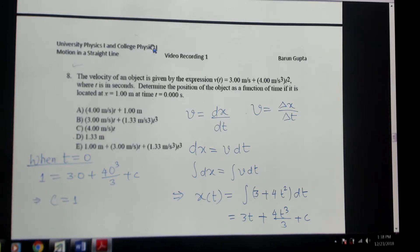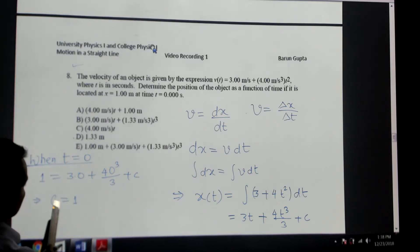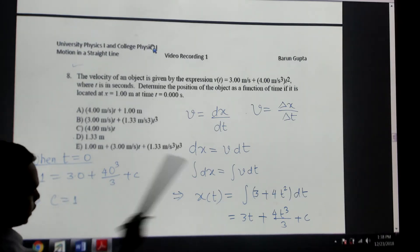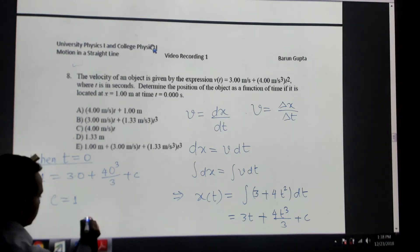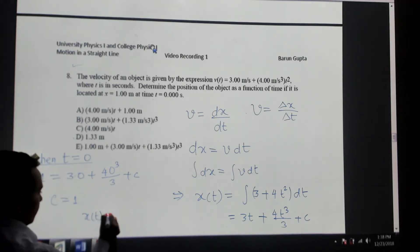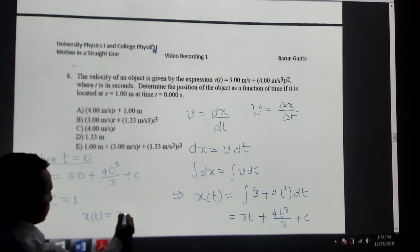I'm just plugging this C equals 1 into this equation. So my final equation would be x as a function of time: this is 3 times t